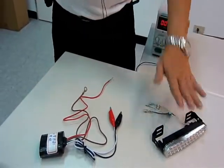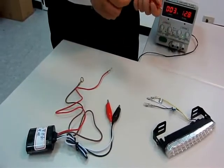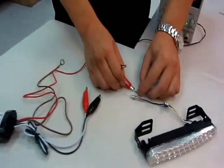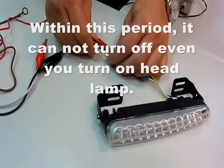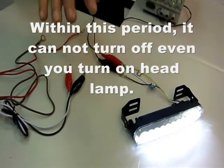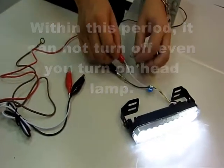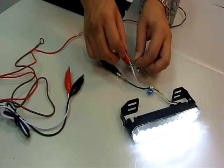When you connect the DRL onto the battery, the DRL will light up for about 13 seconds. Within this time, no turn off function will be activated.